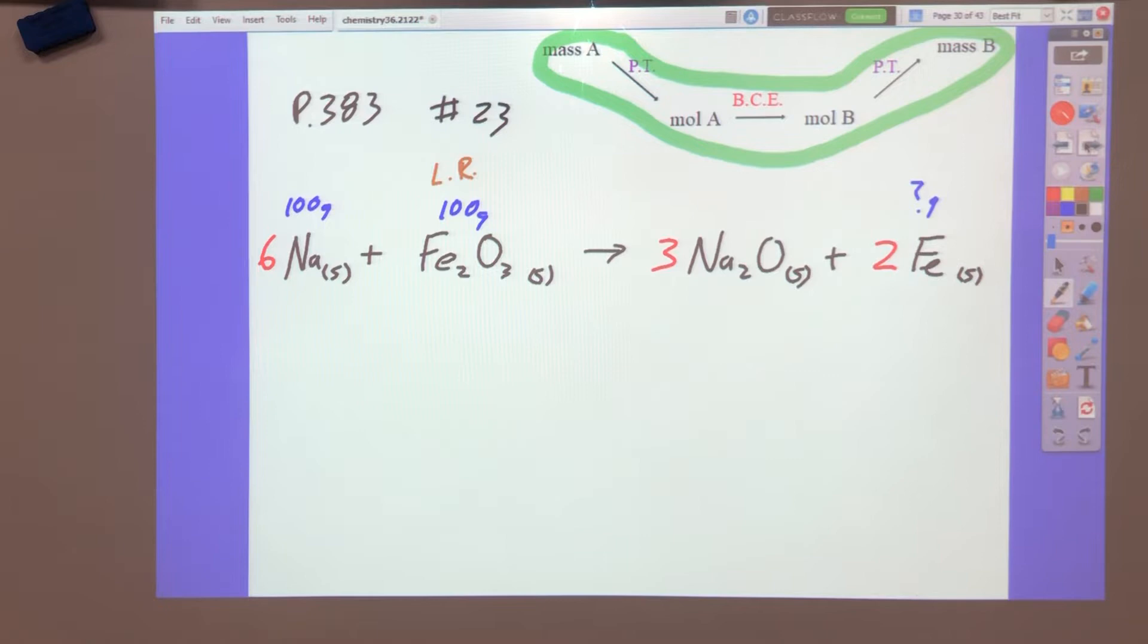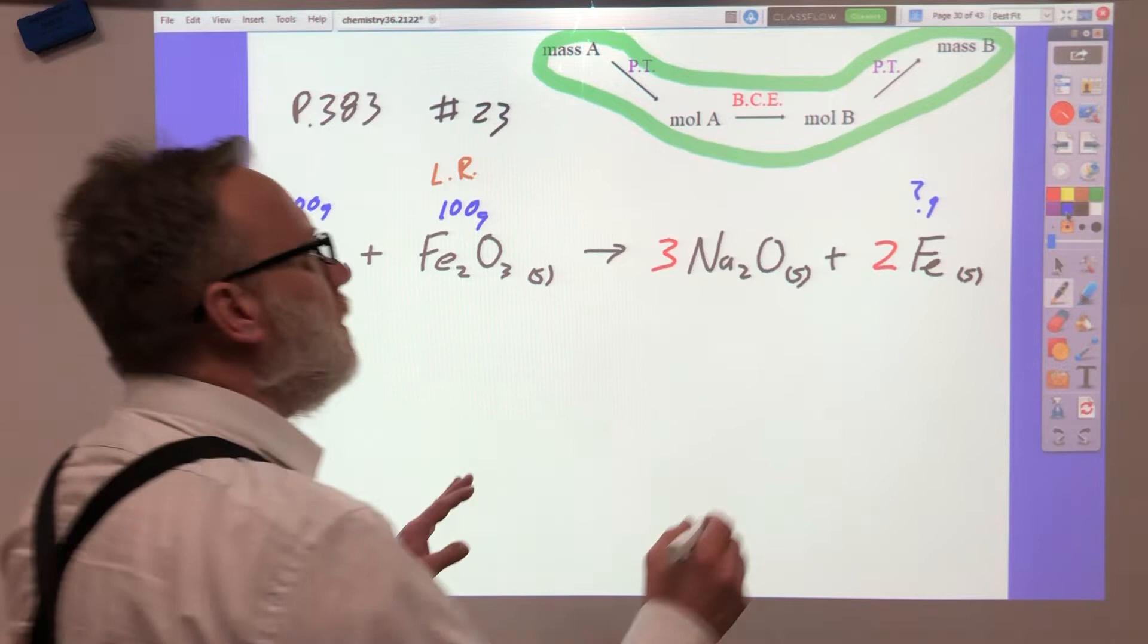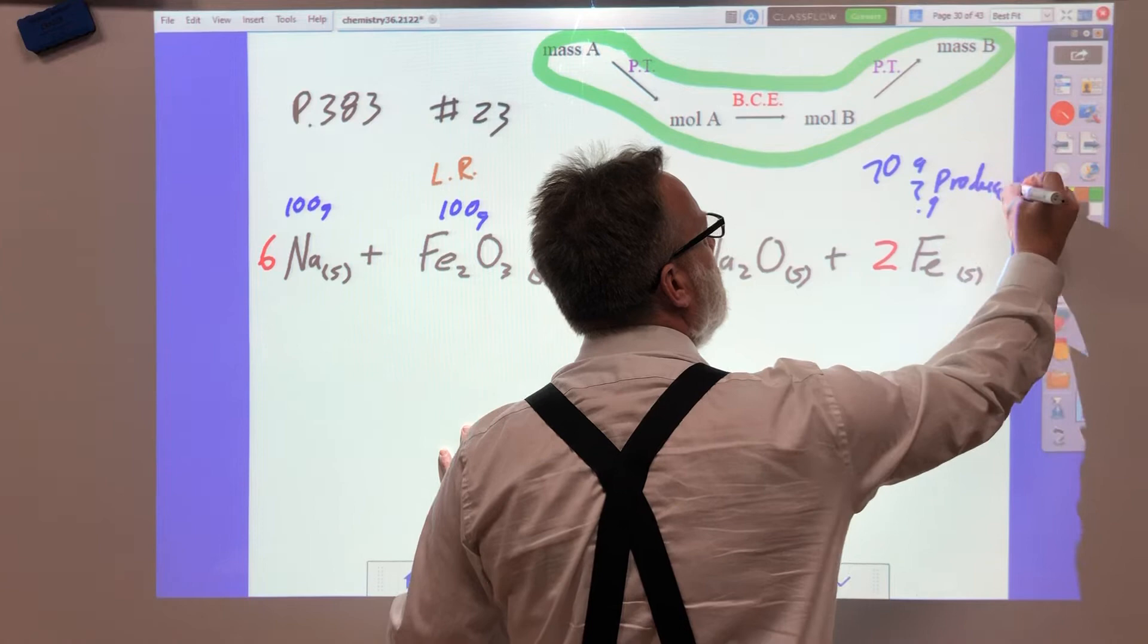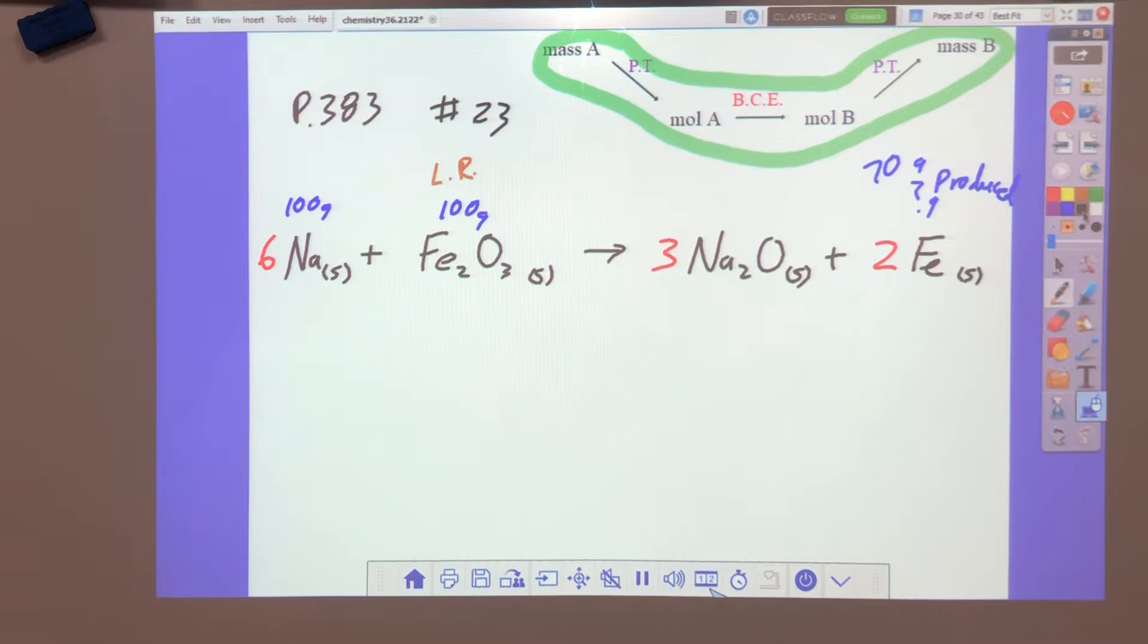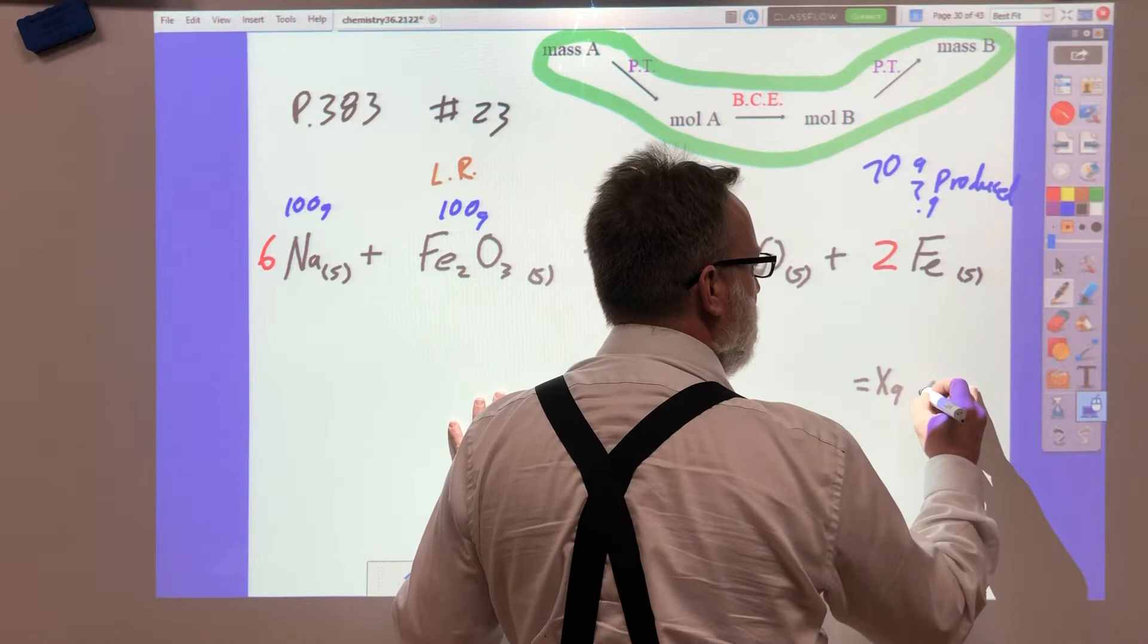So I think we had 70 grams, right? So we now know that this is 70 grams produced. So let's use that to find out this time